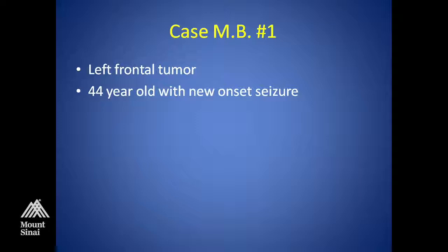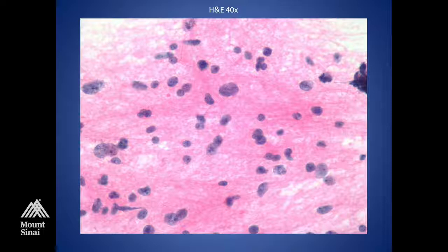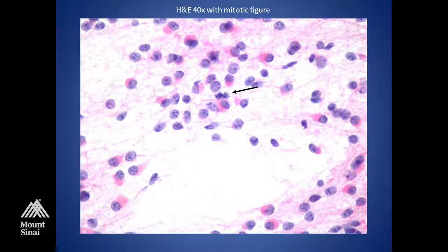The next case: left frontal tumor in a 44-year-old with new-onset seizures. The smear shows a neoplastic infiltrate of a monomorphic population of cells. The cells have very scant cytoplasm. The nuclei are relatively round with fairly open chromatin, and there are cell processes — some fibrillary processes. There is some pleomorphism to the nuclei, and some nuclei are a little bit larger than others. And there are mitotic figures.